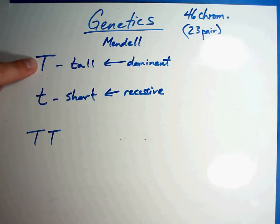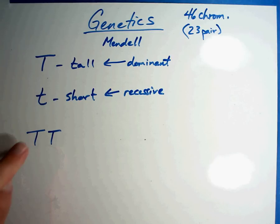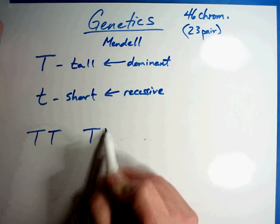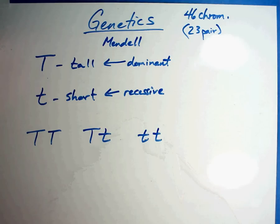Combinations that can happen: big T, big T. Realize you get one gene from your mom and one from your dad. It works in plants that way too. One plant gives one gene, one gives another. So you get a big T, big T. You can have big T, little t. Or you can have little t, little t. These are possible things of how you can put these two letters together.